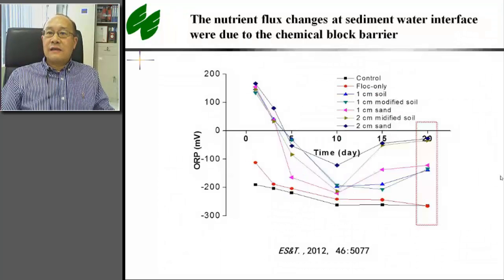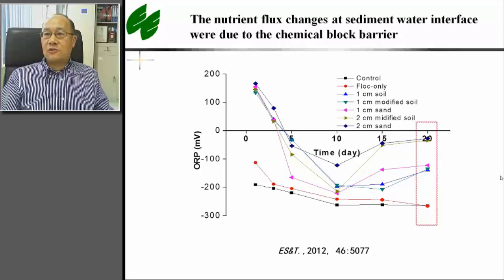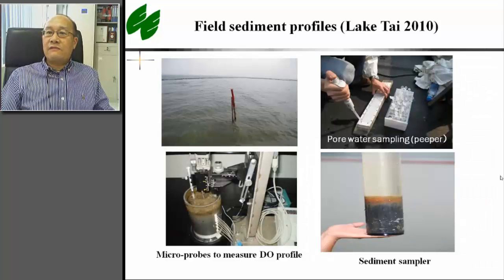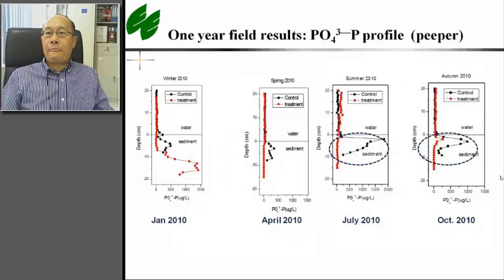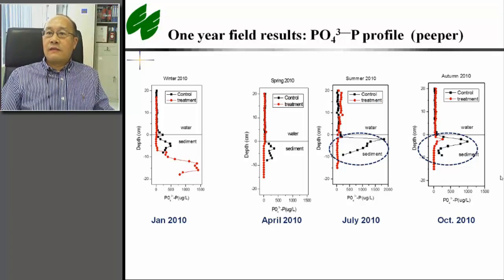The reason for this effect is because the capping layer can provide a chemical barrier with much higher redox potential than the untreated sediment. We have studied the capping effect in open lake at Meiliang Bay at Lake Taihu, where only the sediment was treated, but not the surrounding water. For the untreated lake sediment, there is a high peak of phosphate in the summer and autumn. This phosphate peak was largely removed by the capping treatment during the winter.